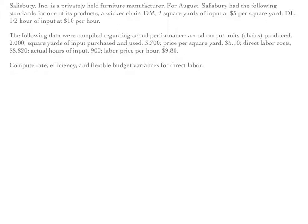Direct materials were two square yards of input at five dollars per square yard. Direct labor is a half hour of input at ten dollars per hour. The following data were compiled regarding actual performance: actual output units, which are chairs produced, was two thousand; square yards of input purchased and used was thirty-seven hundred; price per square yard was five dollars and ten cents; direct labor costs were eight thousand eight hundred twenty dollars; actual hours of input were nine hundred; and labor price per hour was nine dollars and eighty cents. What we're tasked with here is to compute the rate, efficiency, and flexible budget variances for labor. So the first thing we do is draw our chart and label everything.